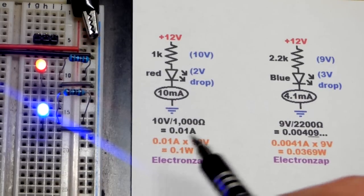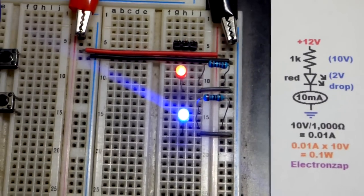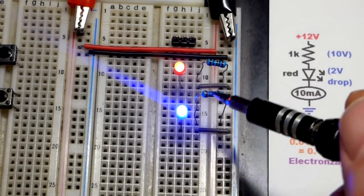This is getting quite warm. Again, this is 12 volts across here, not 5. Be aware of that. That's 1,000 ohms. That's 2,200 ohms right there.